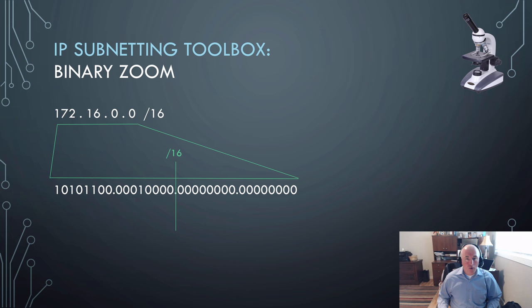We can then draw where the slash 16 goes. Notice it would go 16 bits in counting from the left. So the bits to the left would be the network bits, and the bits to the right would be my host bits.